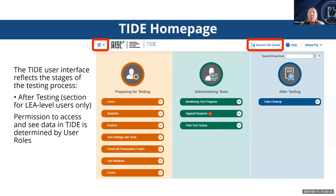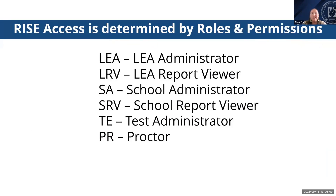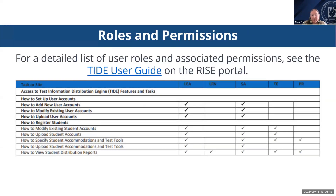There are some changes to note: there's now a waffle menu on the left-hand side allowing you to switch between applications like the reporting system and TDS. The secure inbox has been replaced by the secure file center, where you can access secure documents and student data files previously exported from TIDE, as well as download, archive, or delete previously exported files. Permissions for accessing data in TIDE are determined by your user role — there are six different roles, each with different permissions. LEA and school administrators are granted more permissions than teachers or proctors.